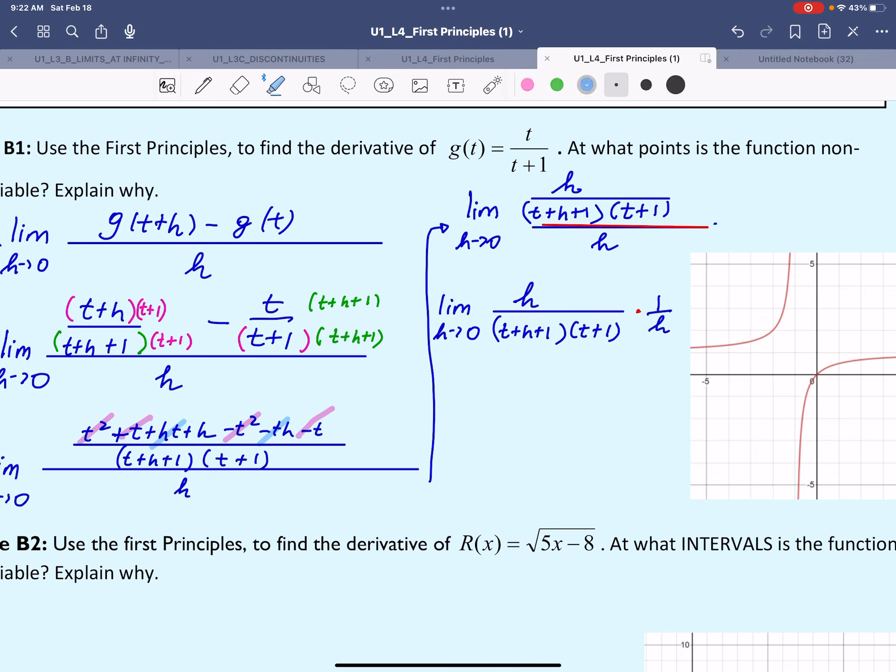We have h and h that simplifies. So that would be the limit as h approaches 0 of 1 over [(t+h+1)(t+1)].